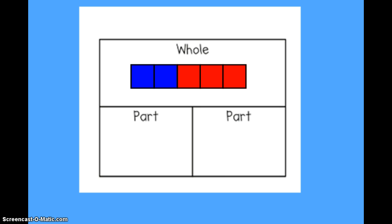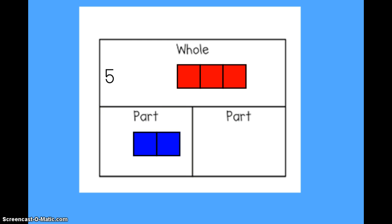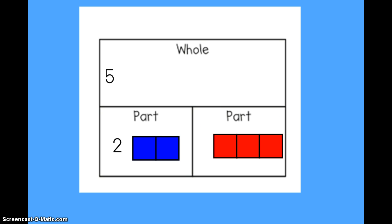If I look at this part-part-whole mat, I see that my whole is five. That is what I'm going to start with for subtraction. If I break off one of the parts, I have another part left over. So I took my whole and I broke it into two parts. My two parts were two and three, showing me that the number five can be broken up into two and three. The numbers five, two, and three are related — I can use them to help me write subtraction and addition sentences.